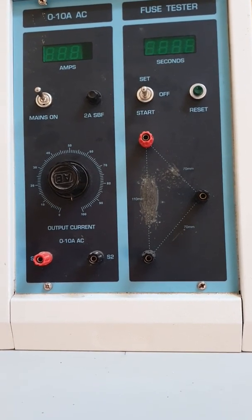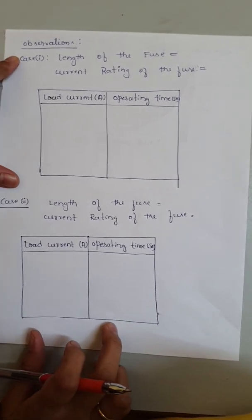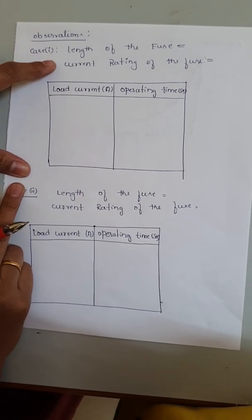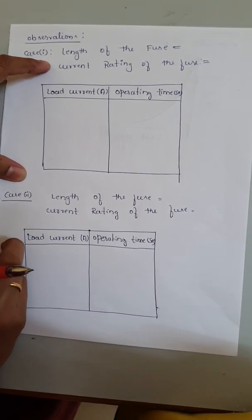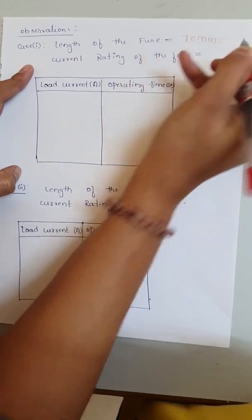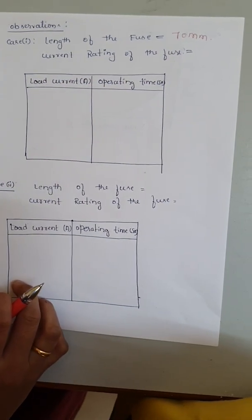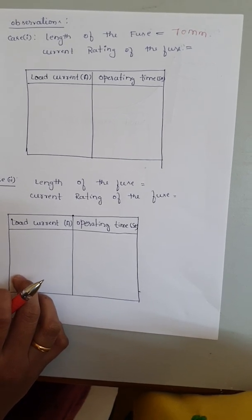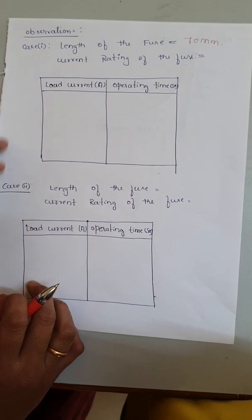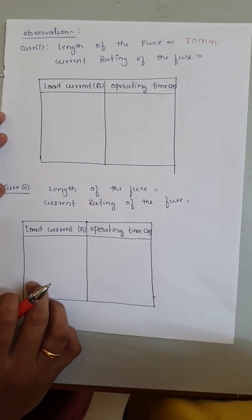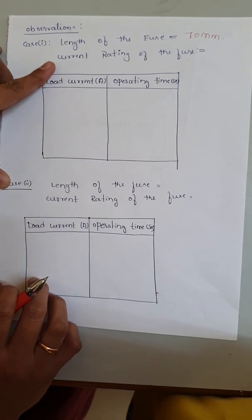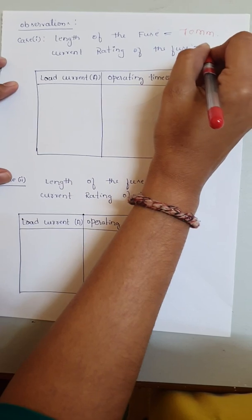The tabular column has two cases. We connect the fuse for two distances: 70 mm and 110 mm. For case one, the fuse length is 70 mm. The current rating of the fuse is the maximum current which the fuse element can withstand without overheating or melting. Every fuse material has its own current rating. For the given fuse metal, the current rating is 6 amperes.